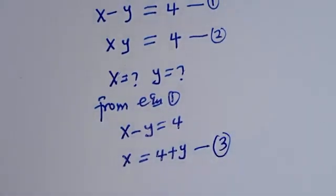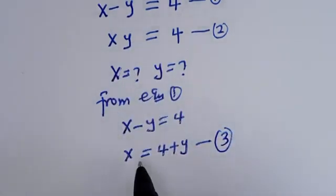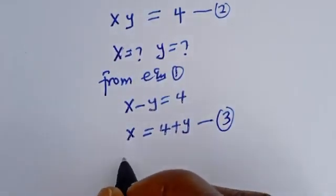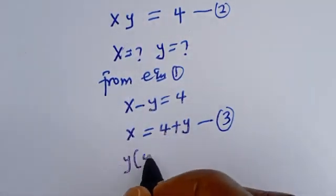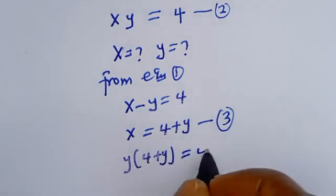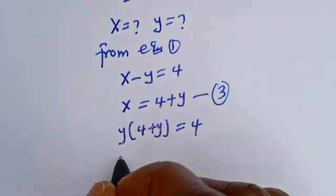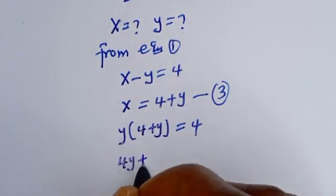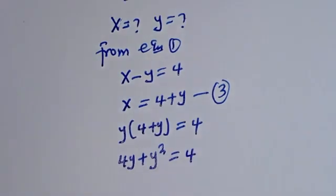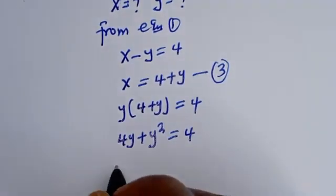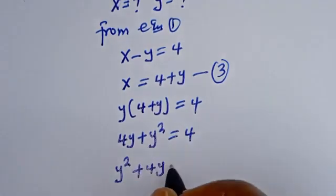We can now substitute equation 3 into equation 2. That gives us y times (4 plus y) is equal to 4. Expanding: 4y plus y squared is equal to 4.